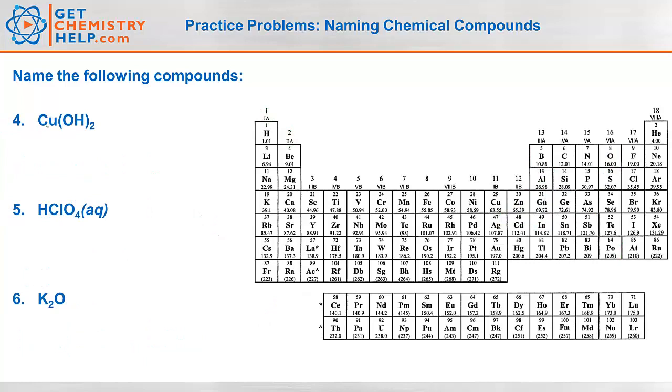How about this one? Cu(OH)2, or Cu-OH taken twice. Is this ionic, molecular or an acid? Well copper is a metal, OH is a polyatomic ion, so it's got to be ionic. How do we name Cu? Well that's copper. Will copper need a Roman numeral? Well it's not in group 1, it's not in group 2, it's close, but it's not in our magic triangle, so it will need a Roman numeral.